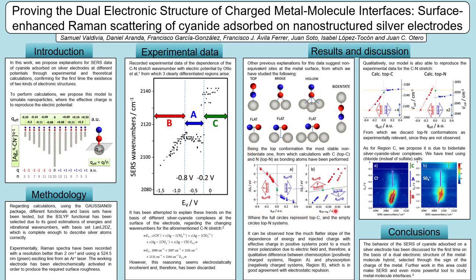We have here calculated data: effective charge versus energy, and injected charge versus energy. In both cases we see that the positive systems are more impervious to change and have a stronger electronic structure than the negative ones. When talking about surfaces, this would imply that for positive systems we have a case of chemisorption, and for negative systems we have a case of physisorption.